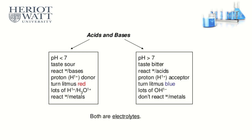What is an acid and what is a base? For pH less than 7, we call that an acid. It tastes sour, reacts with base or alkaline, is a proton donor, turns litmus paper red, and has a high concentration of H⁺ or H₃O⁺. It also reacts with metal to produce hydrogen gas.